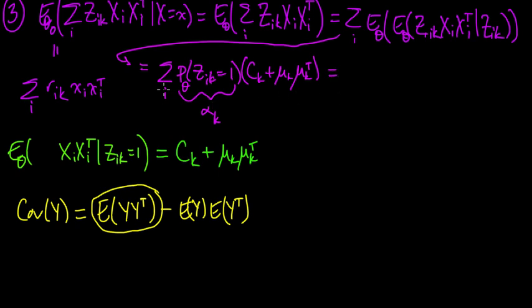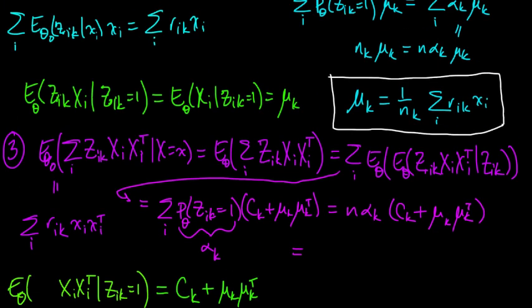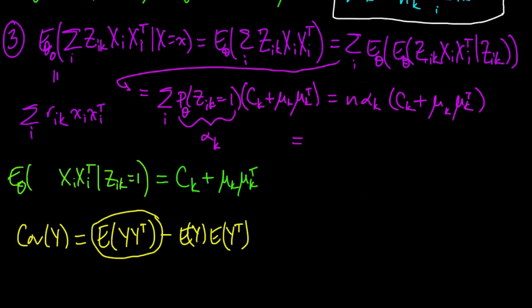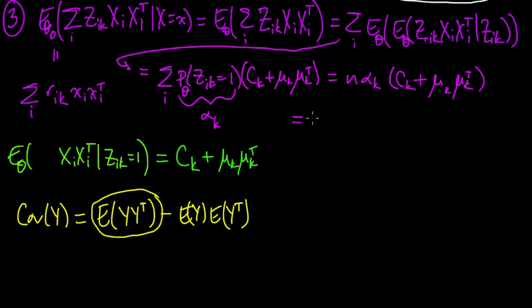Remember, when zik was 0, it just dropped out. So it's the probability that zik equals 1 under theta times this conditional expectation given zik equals 1. That we found was this thing: ck plus mu_k mu_k transpose. And this, just like before, this was alpha_k for this theta. What do we get? The i just makes an n, so we get n alpha_k ck plus mu_k mu transpose.